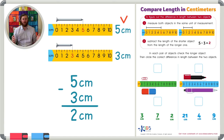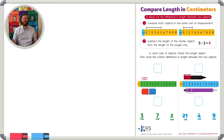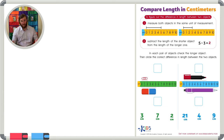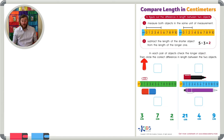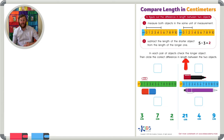Let's read the directions for our worksheet and get started, using this strategy to complete the worksheet. 'In each pair of objects, check the longer object, then circle the correct difference in length between the two objects.'